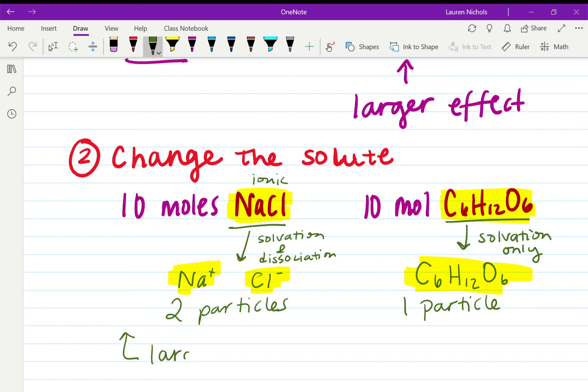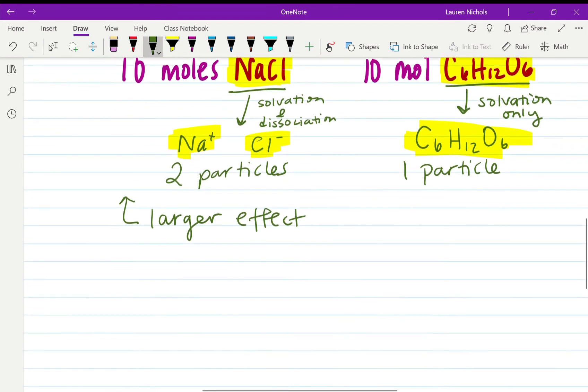When you start off, you both start off with just one NaCl and one sugar, but yet at the end once it's mixed in the solution, you end up with two particles for NaCl and only one particle for sugar. And so that means that our 10 moles of NaCl is going to have the larger effect.